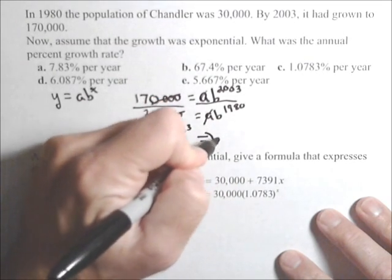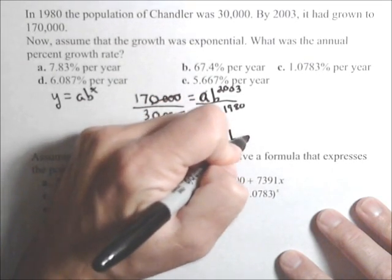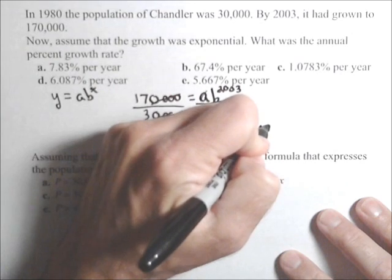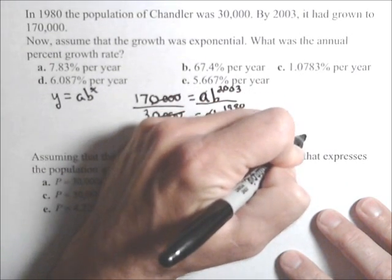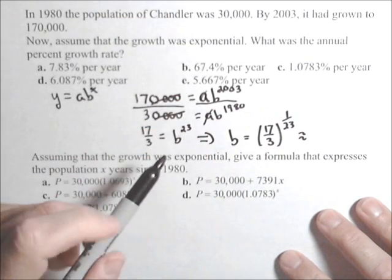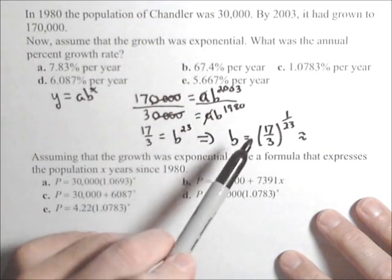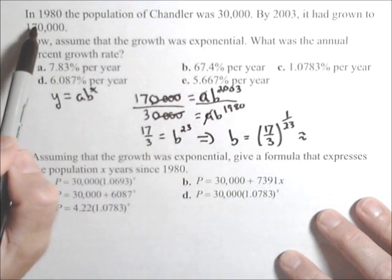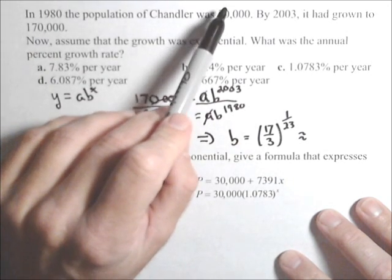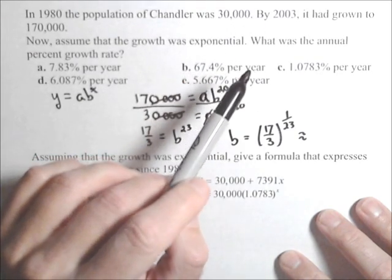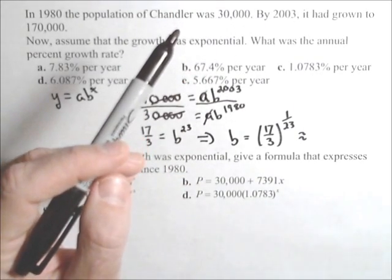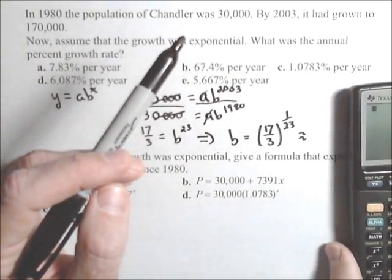To solve for b, we raise both sides to the 1/23rd power. I said I'd show you a shortcut for these kinds of problems. Notice what b is: it's the second output divided by the first output, raised to the one over the time between them. That will always work for finding the percent growth between two points.